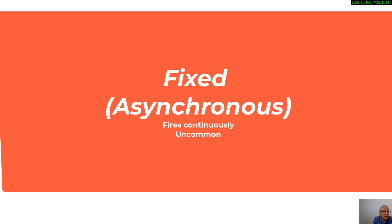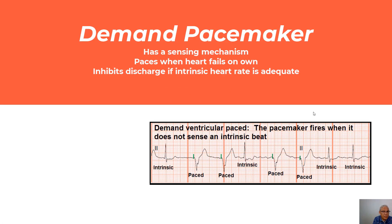Pacemakers can be classified as a fixed-rate or asynchronous pacemaker, where the pacemaker fires constantly. This is uncommon today and may be relevant in an emergency. The more common type is a demand or synchronous pacemaker, which paces only when the heart fails. It has a sensing mechanism that determines when the pacemaker needs to fire, and when the heart has a spontaneous heartbeat, the pacemaker inhibits the discharge.